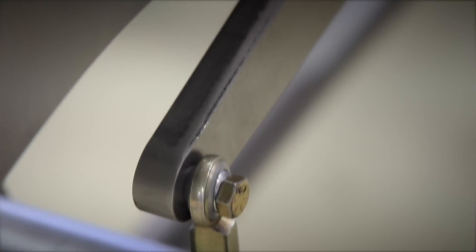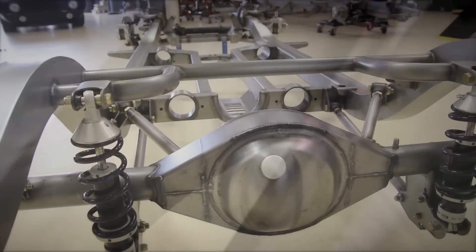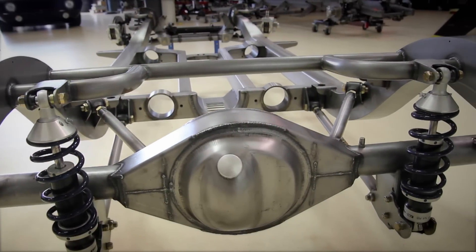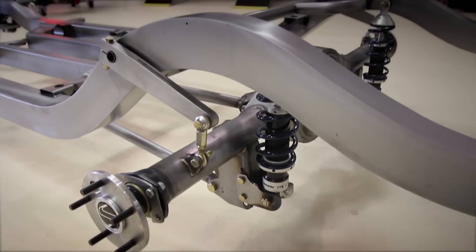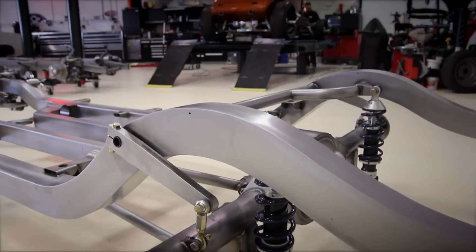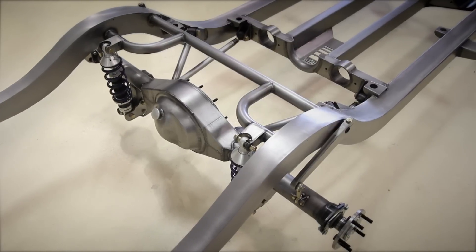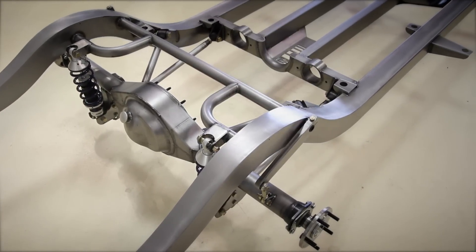For the rear sway bar we were able to do a non-invasive spline sway bar by running that through the coilover crossmember through the frame rail. This allows for the use of a 12 inch wide wheel with a performance spline sway bar that is virtually unnoticed.